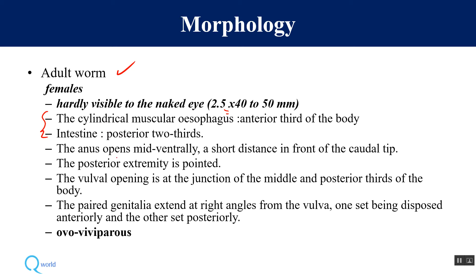The anus opens mid-ventrally and the posterior extremity is extremely pointed. The vulva opening is at the junction of the middle and posterior thirds of the body, with paired genitals at right angles from the vulva. Importantly, the female is ovo-viviparous — she releases eggs which already contain an embryo inside, and as soon as the egg is released, the embryo hatches out.